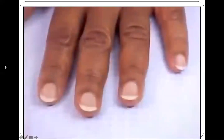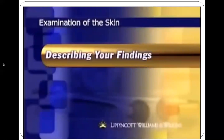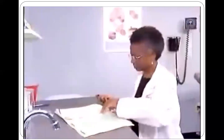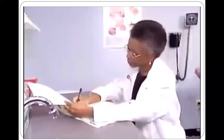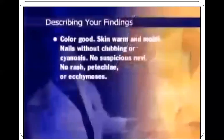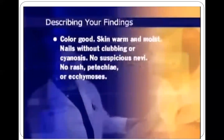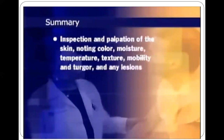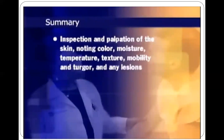Longitudinal bands of pigment may be seen in the nails of normal people who have dark skin. A clear, well-organized clinical record, employing neutral, professional, and succinct language, is one of the most important adjuncts to patient care. For a healthy patient, your write-up might include: 'color good, skin warm and moist, nails without clubbing or cyanosis, no suspicious nevi, no rash, petechiae, or ecchymosis.' To summarize, examination of the skin includes inspection and palpation noting color, moisture, temperature, texture, mobility and turgor, and any lesions; plus inspection of the hair and nails.